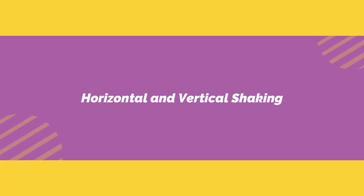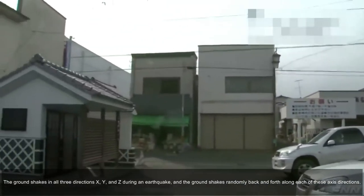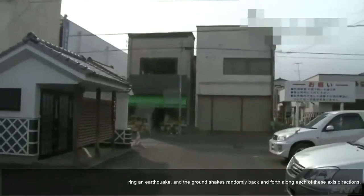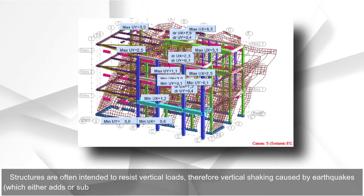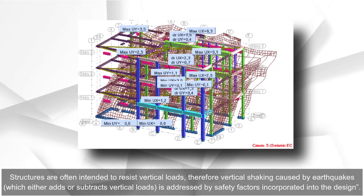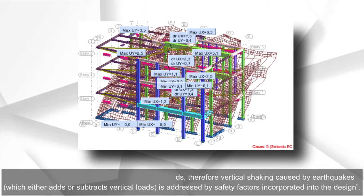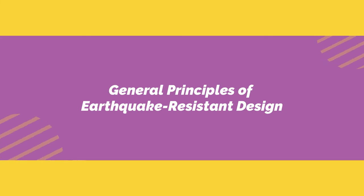Horizontal and vertical shaking. The ground shakes in all three directions — x, y, and z — during an earthquake, and the ground shakes randomly back and forth along each of these axis directions. Structures are often intended to resist vertical loads; therefore, vertical shaking caused by earthquakes, which either adds or subtracts vertical loads, is addressed by safety factors incorporated into the design.